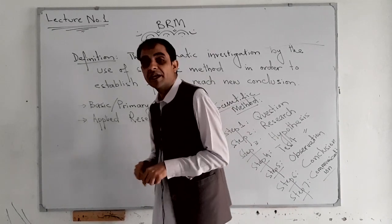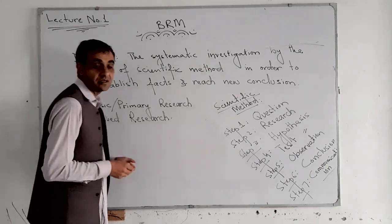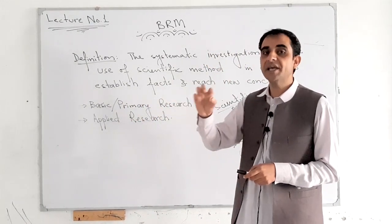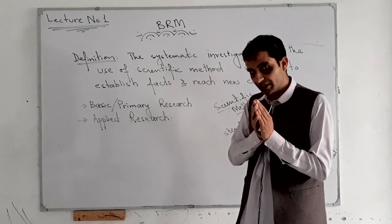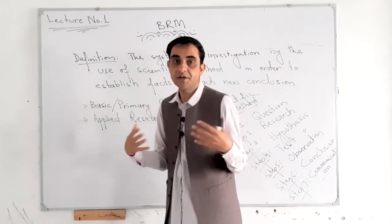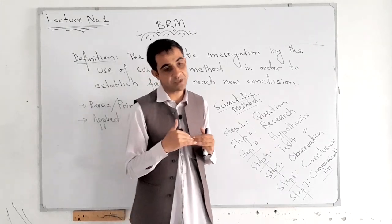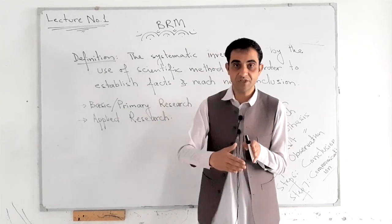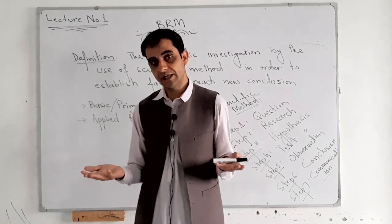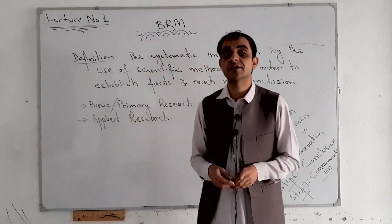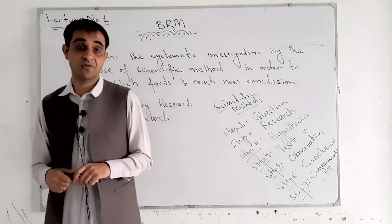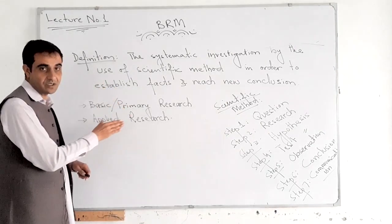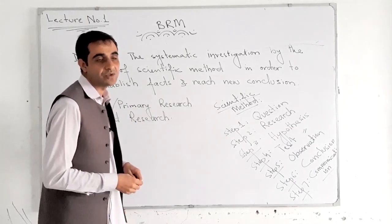The second type of research is applied research. As it is clear from its name — applied — it means that a specific organization is facing a problem and you are conducting a research to find out solution for that problem. For example, ABC company is having a problem of high turnover rate. High turnover means people are hired, and after a very short period of time they leave and are replaced by new employees. You are conducting research to find out solution for that specific problem of high turnover faced by ABC company. That type of research is called applied research.